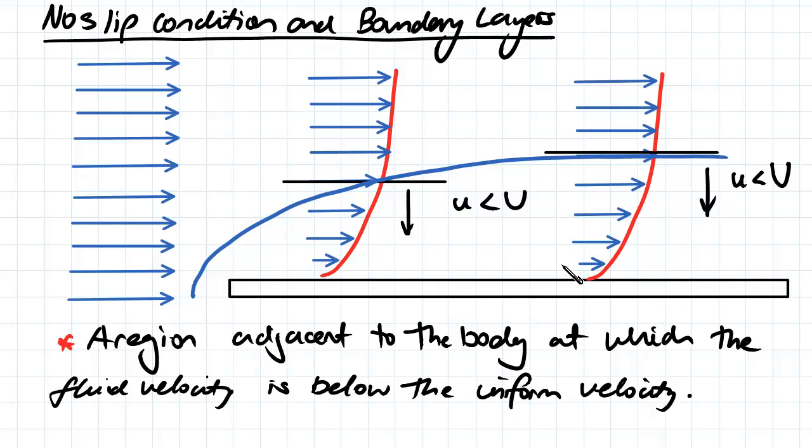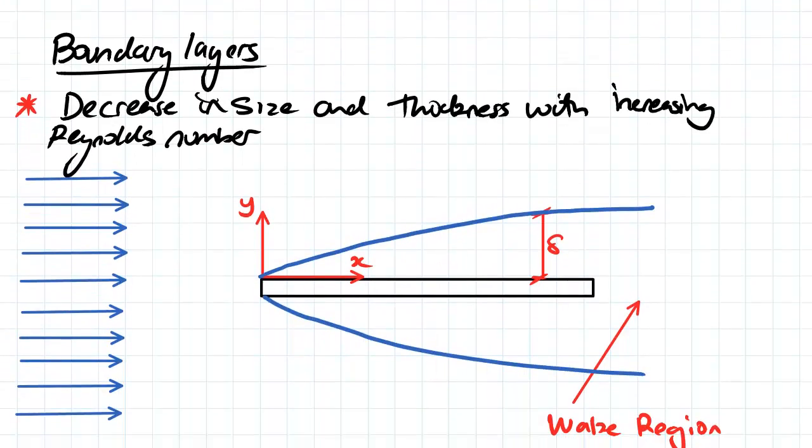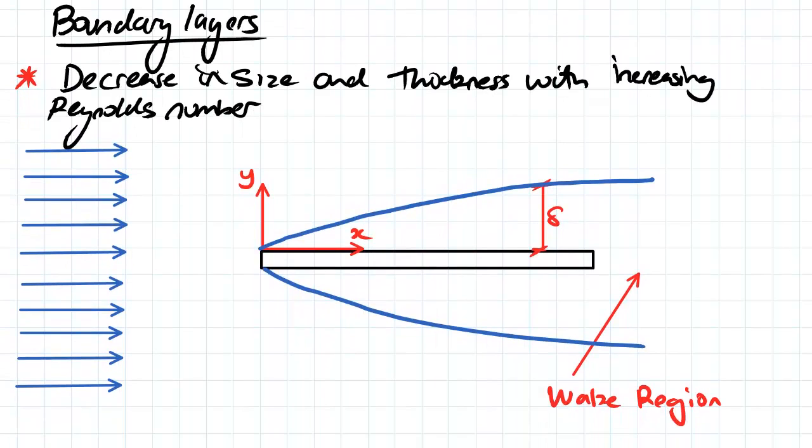So moving on from this, when we change the Reynolds number we also get different sizes for our boundary layers. So as we increase our Reynolds number, we expect to get thinner thickness of our boundary layer. And the thickness of our boundary layer is denoted by this symbol delta here. Also behind our object we also get what's called the wake region and that's where viscous effects are quite important.